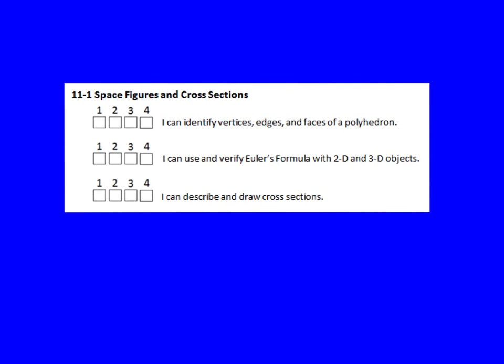These are all new vocab words for us. We should probably know what vertices means already, but edges, faces, and polyhedron are going to be new vocab words you'll be expected to understand. Our next objective is: I can use and verify Euler's formula with 2D and 3D objects. Euler's formula is a new formula that you'll learn. You should check right now on your reference sheet to see if that formula is on there, or if it's something you need to have memorized for the end of course exam. Our last objective is: I can describe and draw cross-sections — one last vocab word for us.